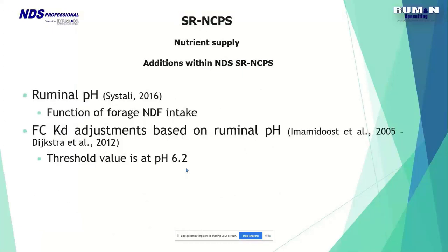For ruminal pH, things are also different in small ruminants. Physical effective NDF is treated differently from a biological point of view — instead of using it to estimate ruminal pH, NDF intake is used according to a 2016 equation. The KD values are adjusted based on ruminal pH, especially when pH drops below 6.2, causing a drastic reduction in microbial production when NDF in the recipe is lower, which means a lower rumen pH.